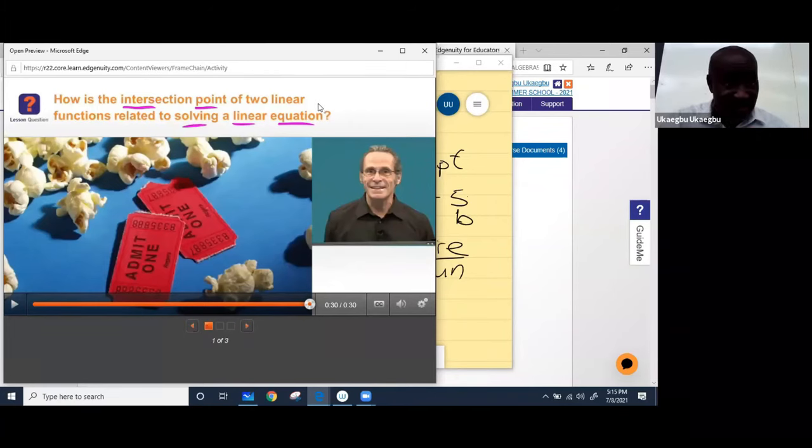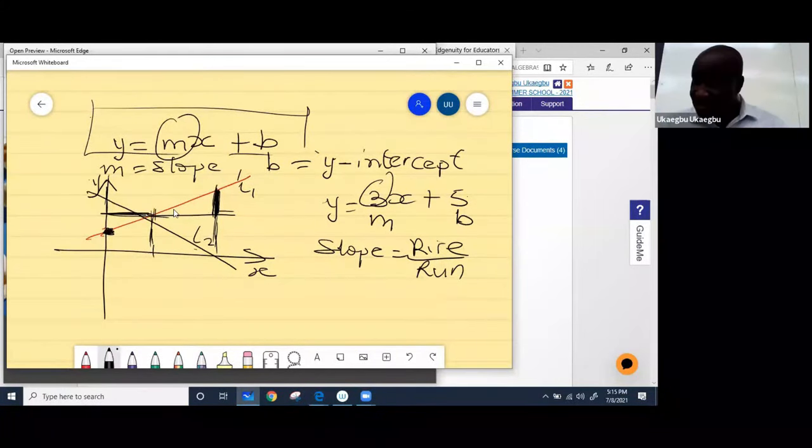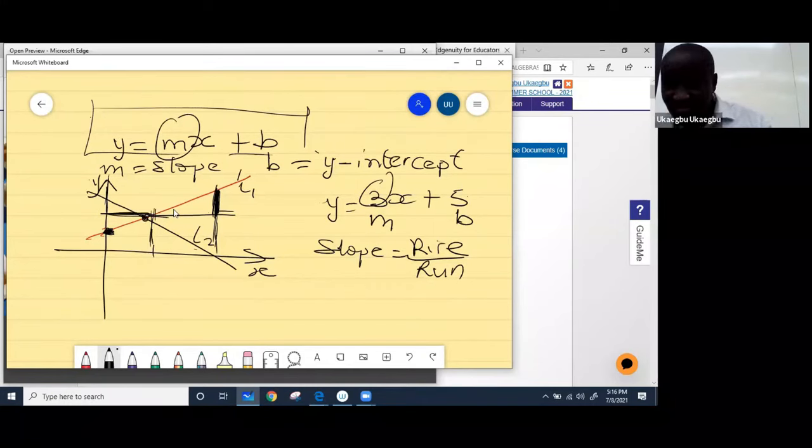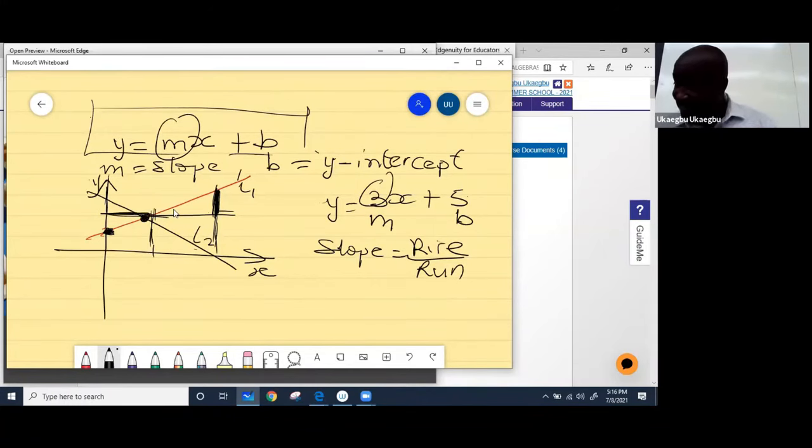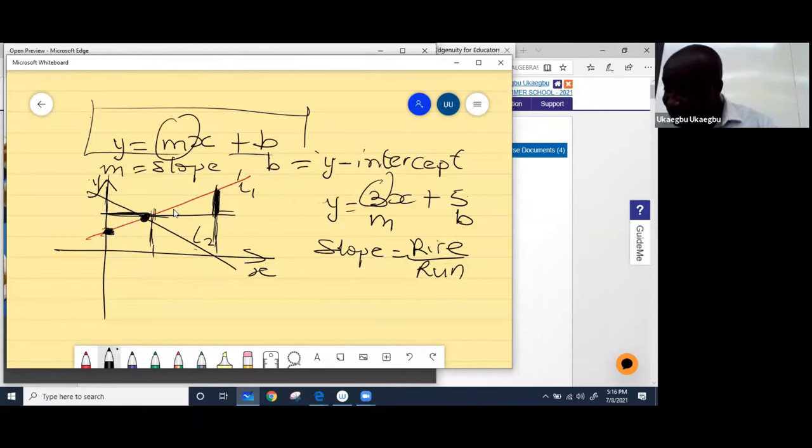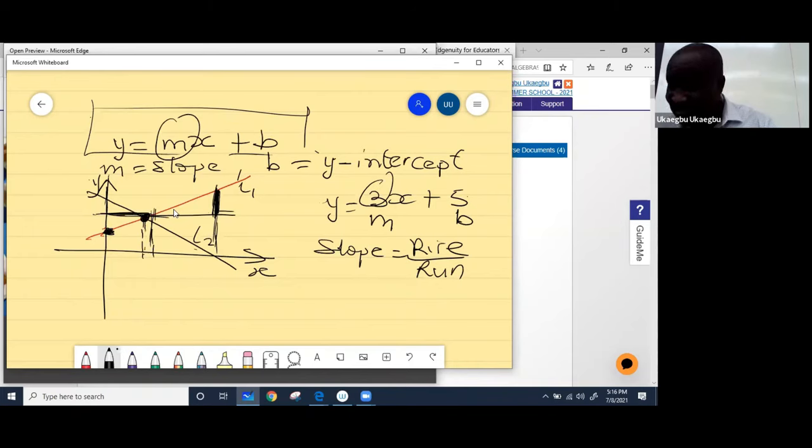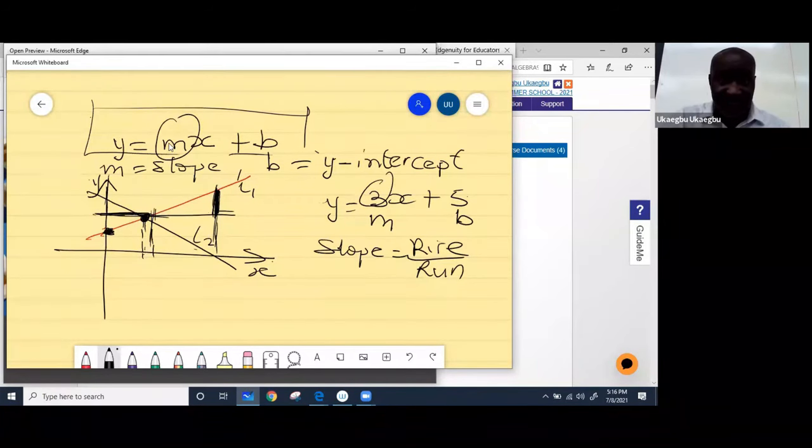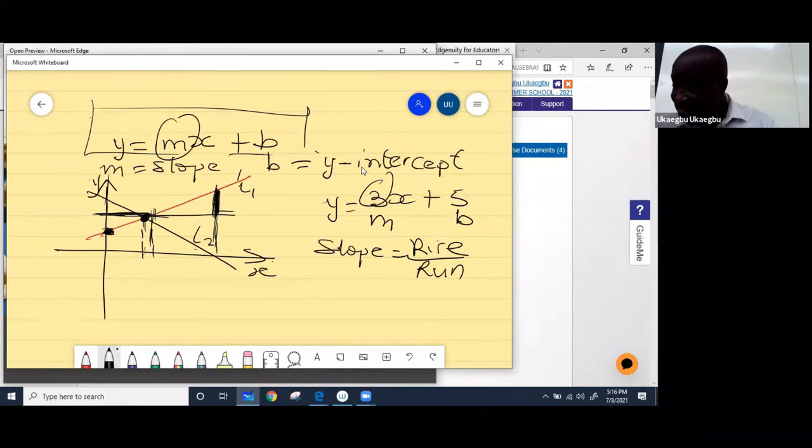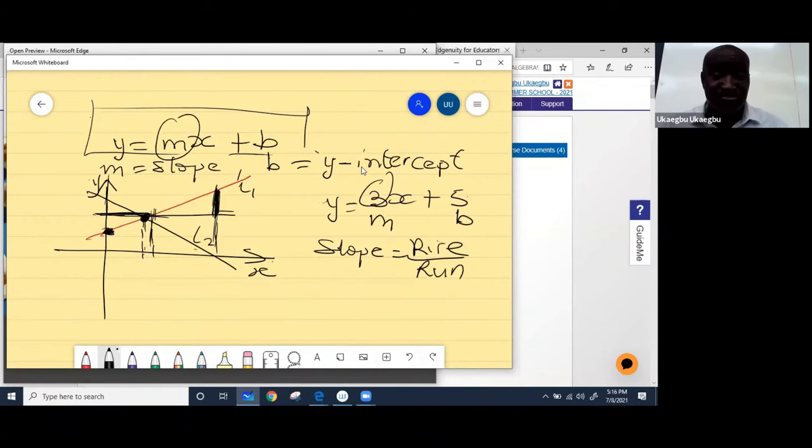Let me minimize this again. So this is the point of intersection where line one and line two cross each other. But if it crosses, then the solution is going to be this point when you move down to the horizontal axis, which is the x-axis, or you move to the vertical axis. So this becomes a solution when two straight lines intersect with each other.